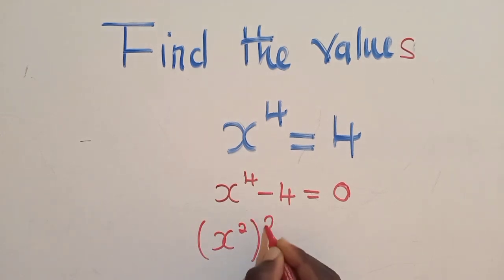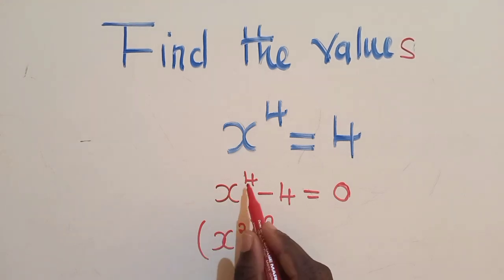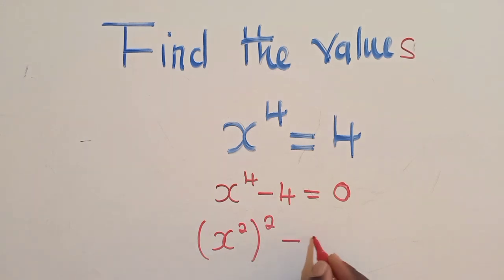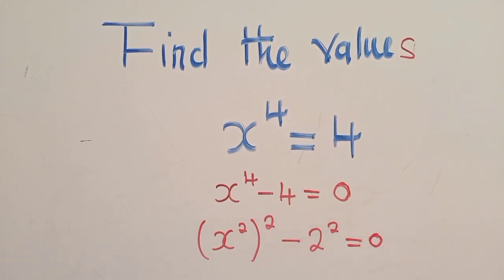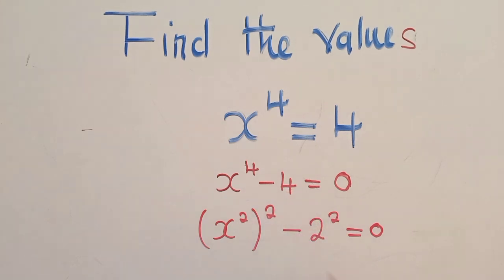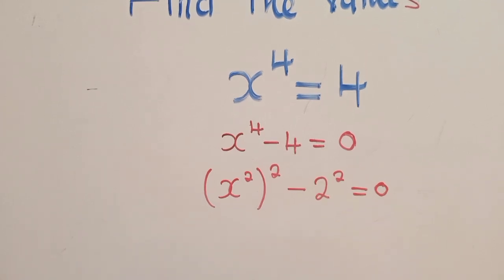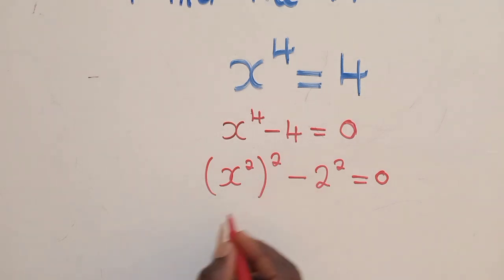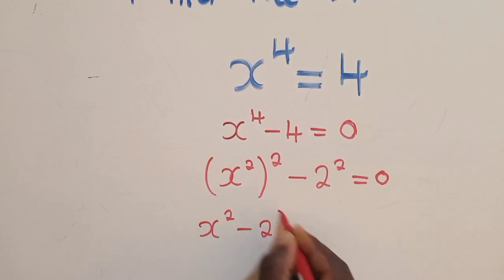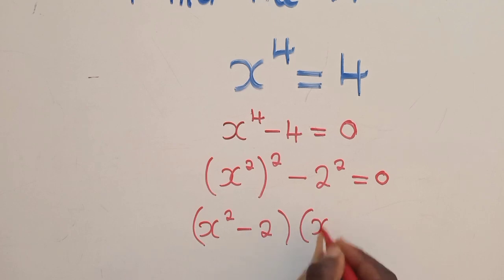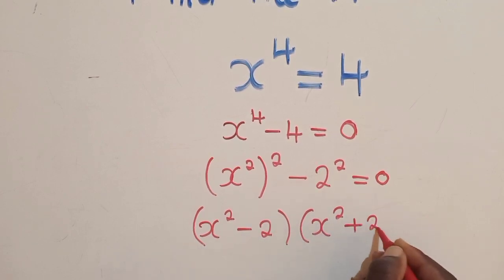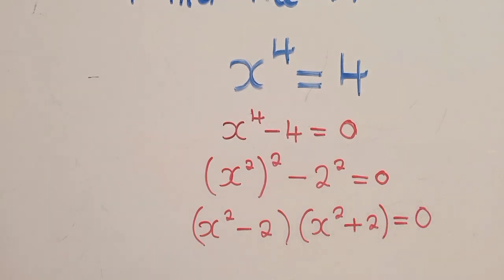...we take advantage of what we call difference of two squares. So it will look like this: we know that (x²)² is the same as x⁴, and then we say minus a² squared is equal to 0. Of course we also know that 2 squared is the same as 4. So now here, if you can see, difference of two squares can be applied.